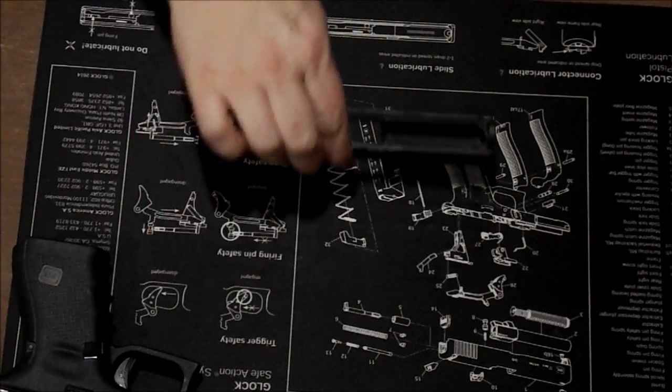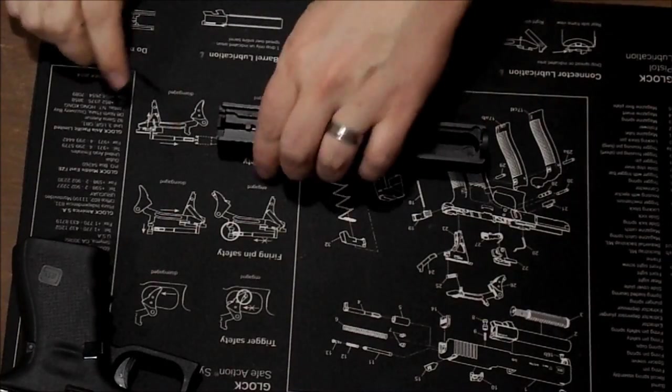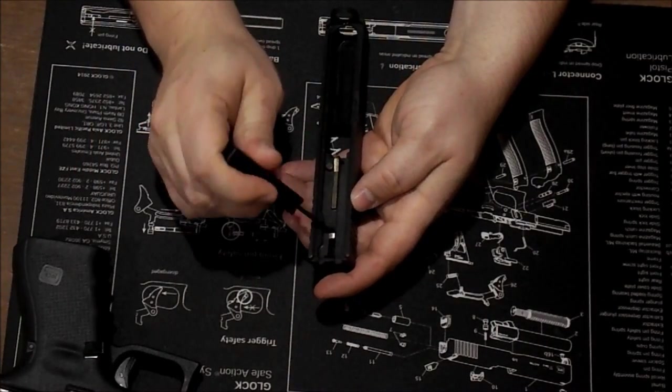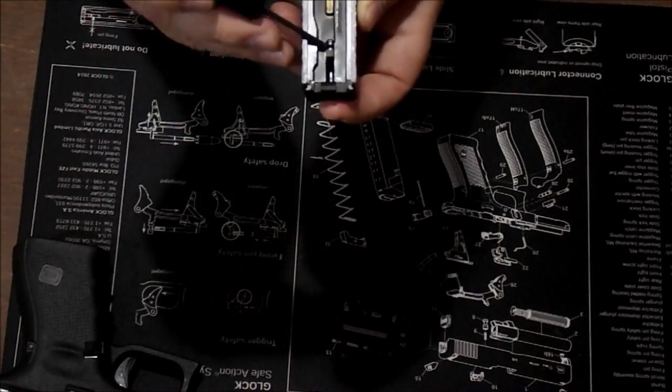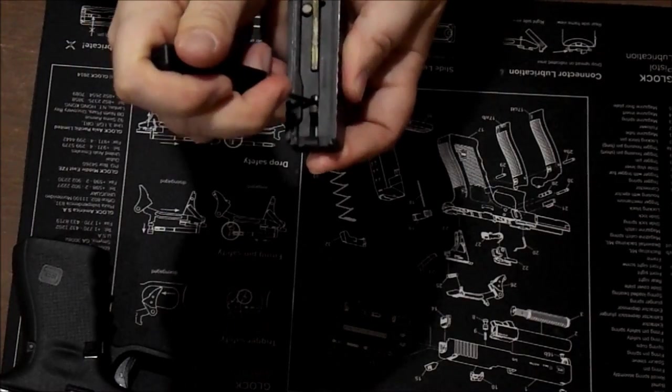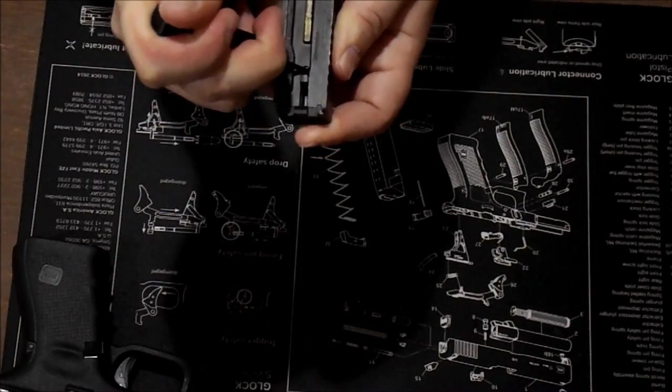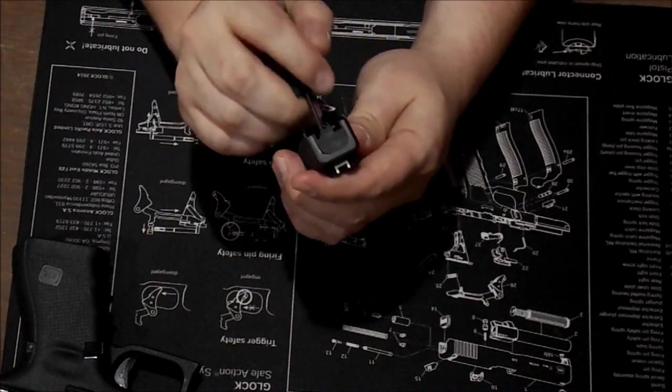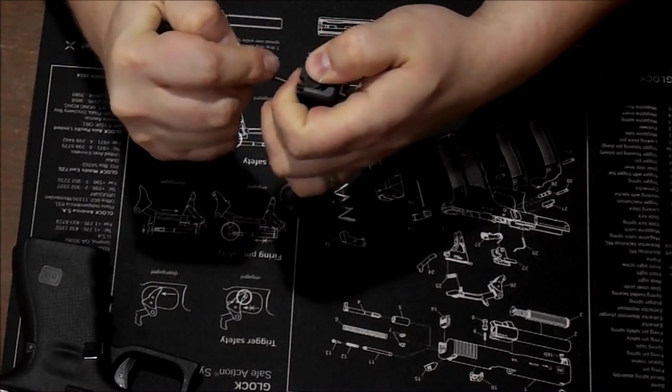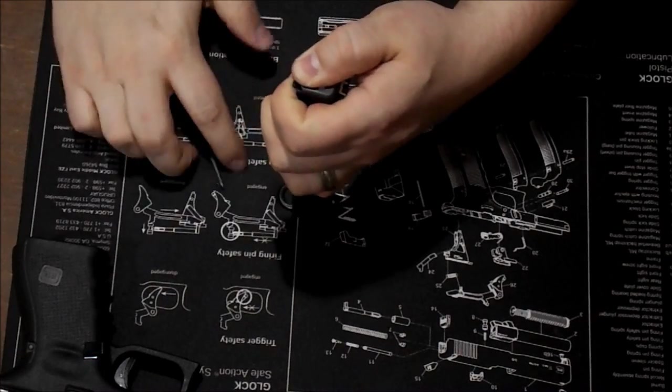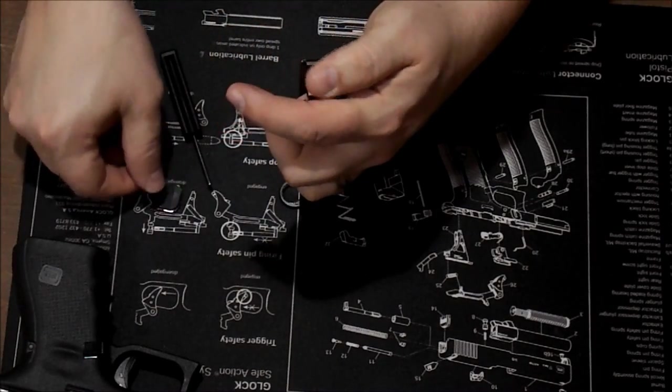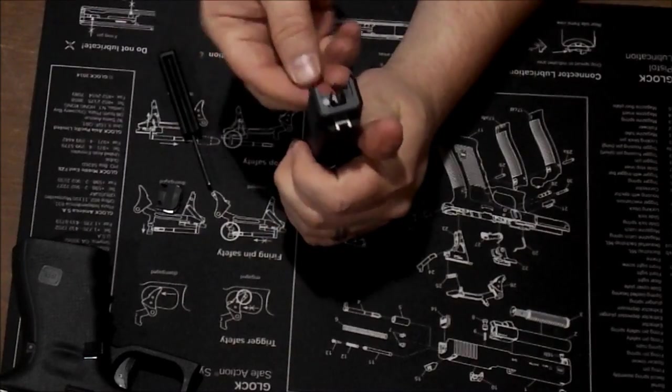We'll start with the slide first. The main thing you need to do is set your slide on end. In here, there's a little spring, or a little black piece right here. You probably can't see it because my lighting's not very good. But you just put your Glock armor tool down in there, and you just push down on that. Once you push that down, you grab your end plate here, and you just slide it out slowly. You've got to keep your finger over it while you're doing it, because there's a spring in there. Just keep sliding it out, and then the end plate comes off.